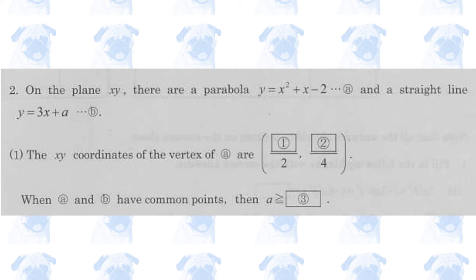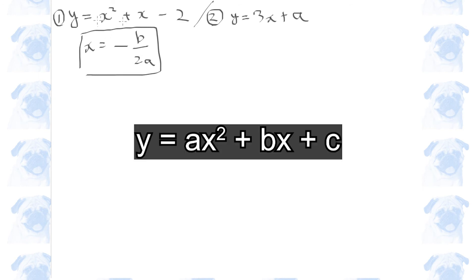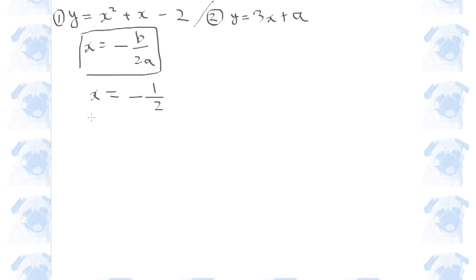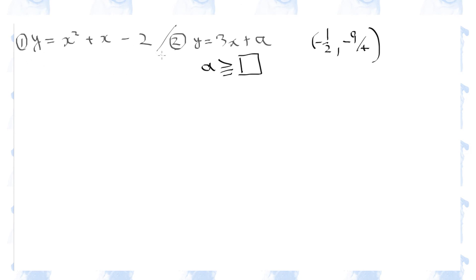Section 2. Let's find the coordinates of the vertex of the parabola. The x-coordinate of the vertex can be found using the formula where a is the coefficient of x squared and b is the coefficient of x. Substituting this value into the equation gives us the coordinates of the vertex. Next, if we assume the parabola and the straight line have common points, we need to find the possible values of a. Let's draw a quick sketch — this is the parabola.